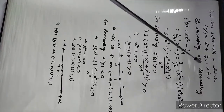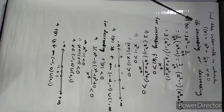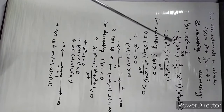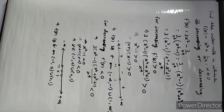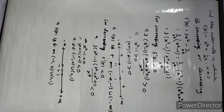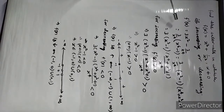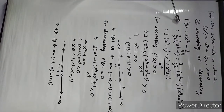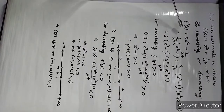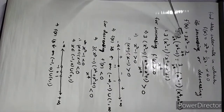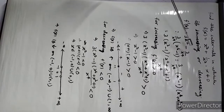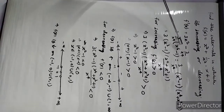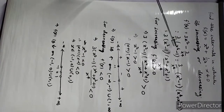Find the intervals in which f(x) = x³ + 1/x³, where x is not equal to 0, is increasing or decreasing. We have f'(x): the derivative of x³ is 3x², and the derivative of 1/x³ is -3/x⁴.